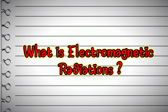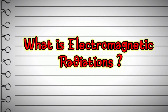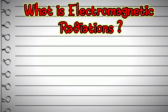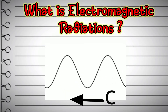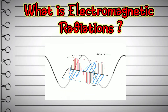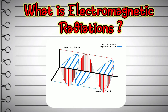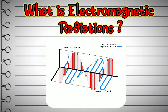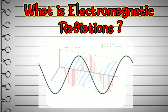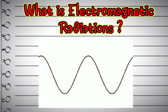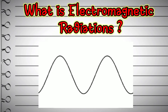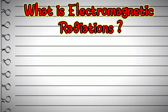Let's start this discussion with some basics of electromagnetic radiations. What is electromagnetic radiation? Electromagnetic radiation is the energy that is transmitted at the speed of light through oscillating electric and magnetic fields. This radiation is transmitted in the form of waves. We need to understand how waves travel in space, after which we can easily learn about the electromagnetic spectrum.